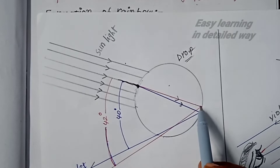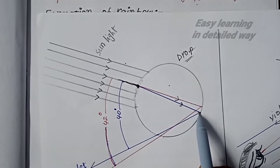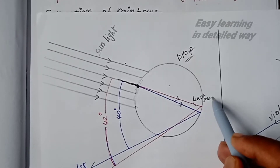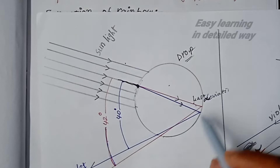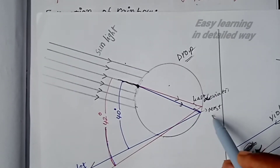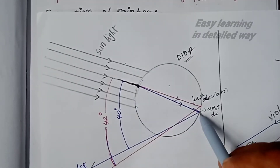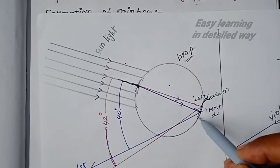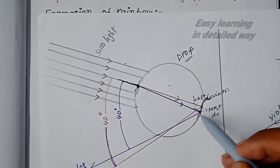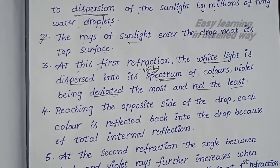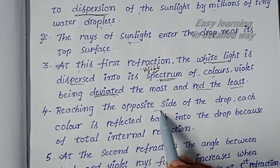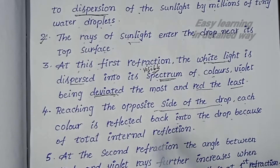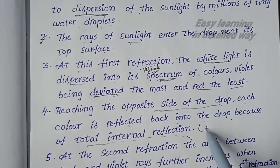Red color has the least refraction and that means least deviation. Violet gets the most deviation - it bends the most. So from the first surface, the 7 colors enter and travel through the drop, reaching the opposite side - that is the second surface of the drop.